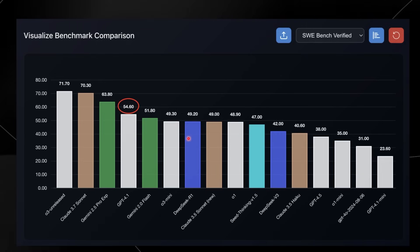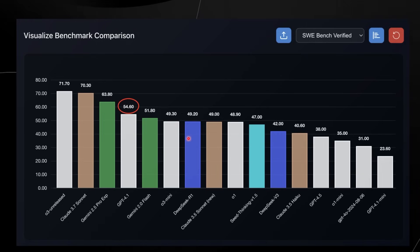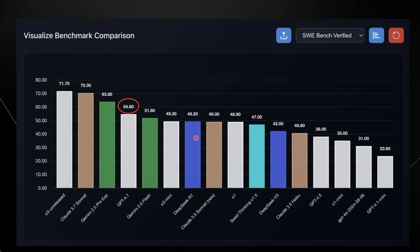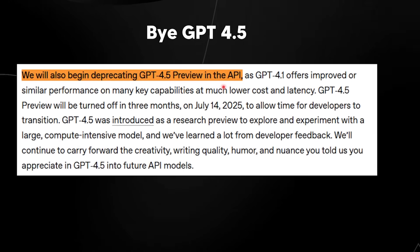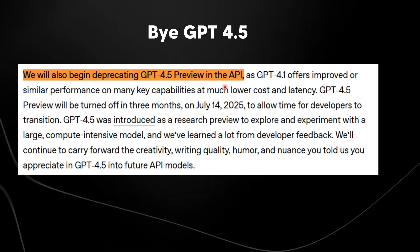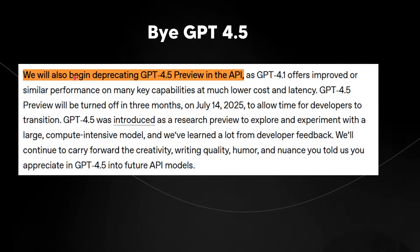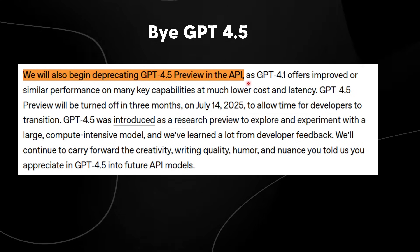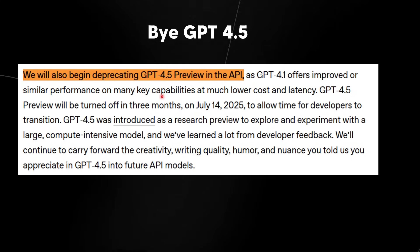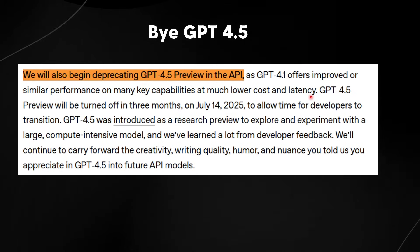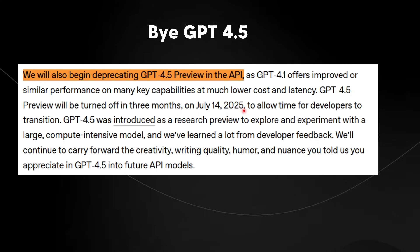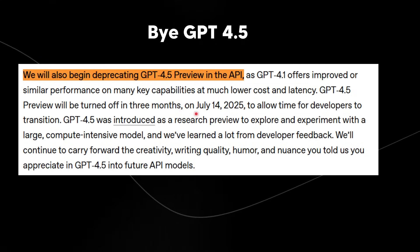I would say GPT-4.1 is more of a model to be plugged into different applications rather than a conversational daily-use model — that would be GPT-4.5. Unfortunately, GPT-4.5 is actually going away. OpenAI mentioned they're going to start deprecating GPT-4.5 in the API, as GPT-4.1 offers improved or similar performance at much lower cost and latency. It will be turned off on July 14th, 2025, to allow developers time to transition.